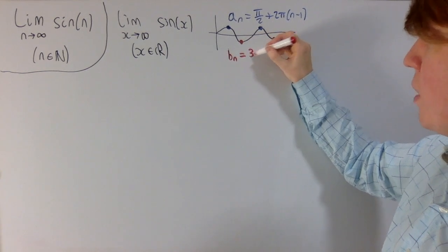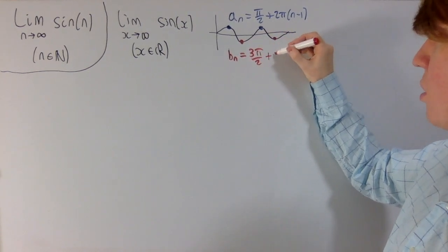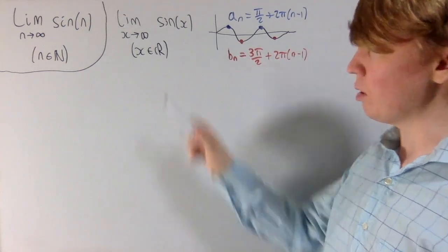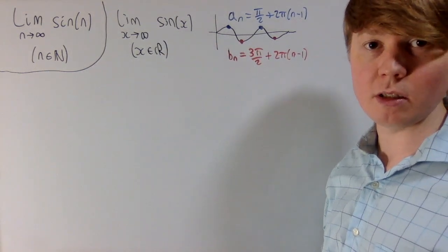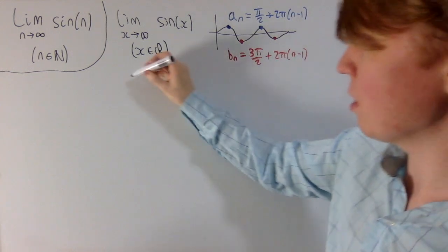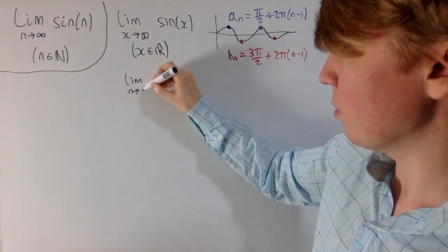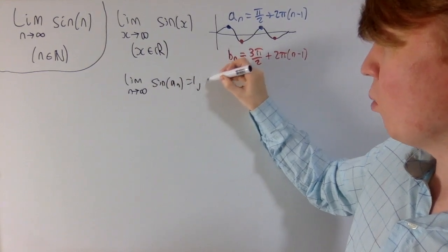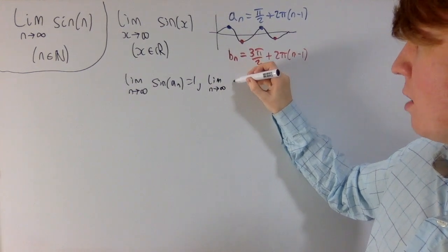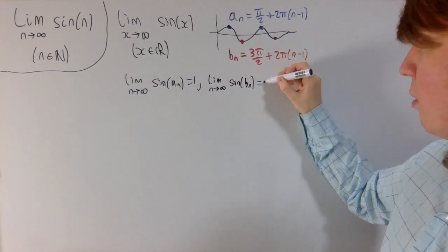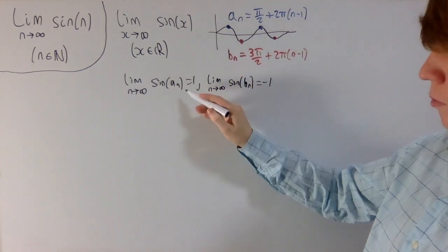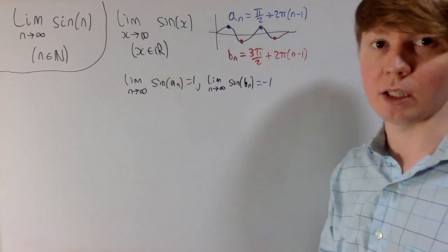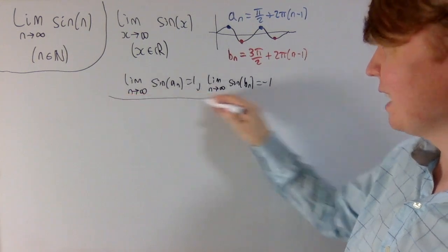Then you could do the same thing and get sine of all these terms equal to minus 1. So b_n equals 3π/2 plus 2π(n−1). The crux of the proof is: if you want to show the continuous limit doesn't exist, you have two subsequences. The limit along the first subsequence, sine of a_n, equals 1. But the limit of sine of b_n equals minus 1. If a limit existed, it would have to equal both 1 and minus 1, which is impossible — therefore the limit doesn't exist.